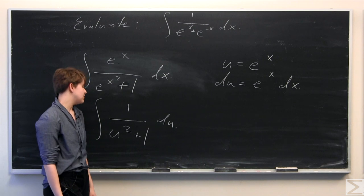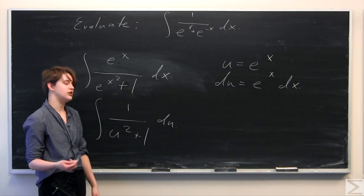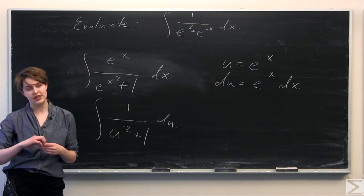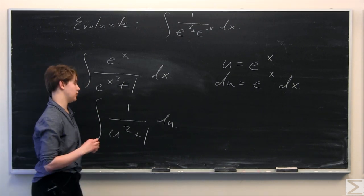So now we have simply 1 over quantity u-squared plus 1. And we know that the integral of 1 over quantity u-squared plus 1 is going to be the arctangent of u plus some constant.